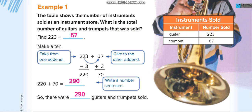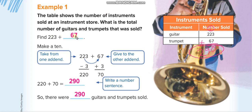We can add them directly: 3 plus 7 is 10, carry 1; 2 plus 6 plus 1 is 9; and 2 gives 290. But according to this lesson, we have to add mentally, so we need to look at the numbers very closely. This number is 223 and this is 67.